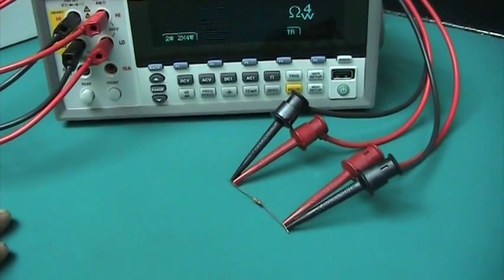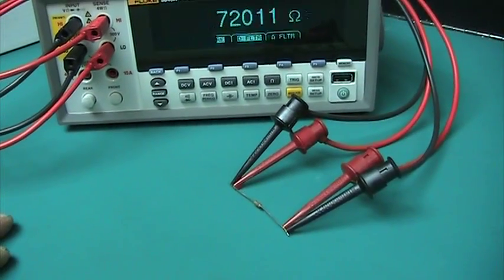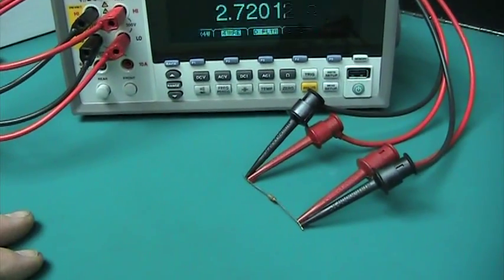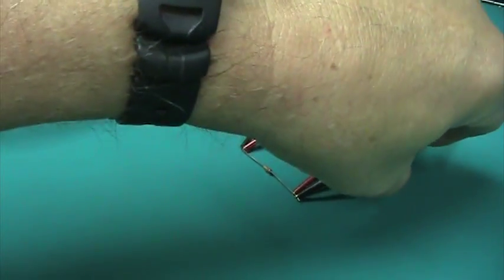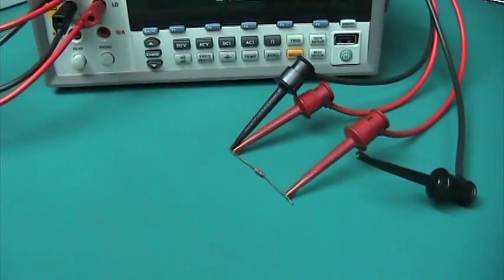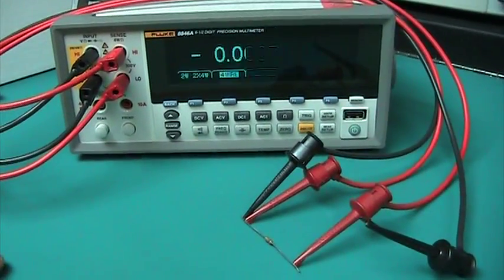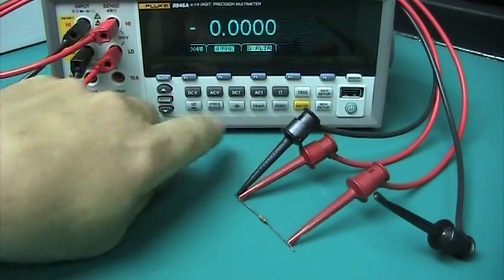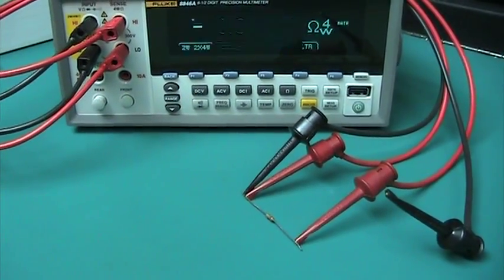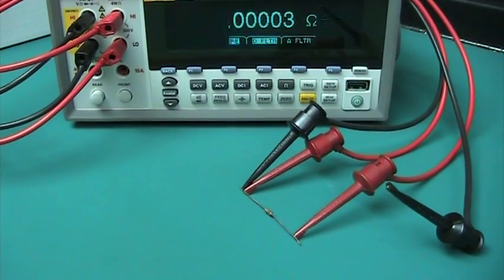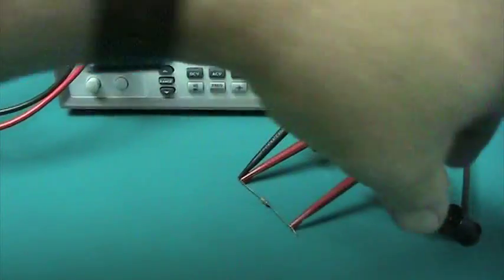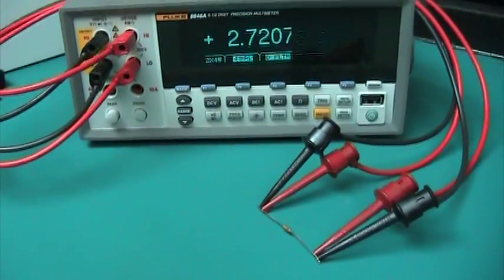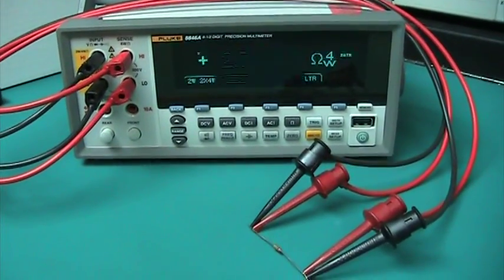How can we use a meter that doesn't have offset compensated ohms to do the same thing? We can do just what we saw here - we disconnect the current, but in this case now we go and we zero the meter out. So we've just zeroed out the thermal EMFs that are there, and now we can go ahead and connect, and now we see what the actual reading is without the thermal EMFs.